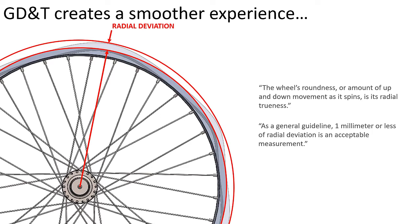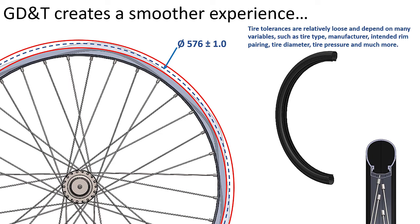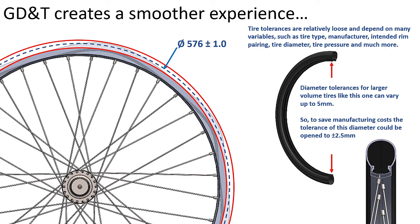The industry sets a guideline that one millimeter or less of radial deviation is an acceptable amount. A nominal size like 576 millimeters would be listed and some tolerance would accompany it. This coordinate dimension would restrict any radial deviations to a maximum of one millimeter total. The tire or tread assembles onto this rim, and most tire tolerances are relatively loose, depending on variables such as tire type, manufacturer, intended rim pairing, tire diameter, tire pressure, and many more. Conservatively, tire tolerances on average are five millimeters diametrically, or plus/minus 2.5 millimeters.